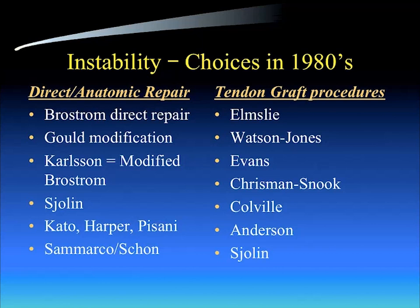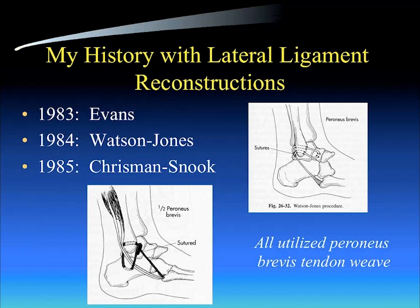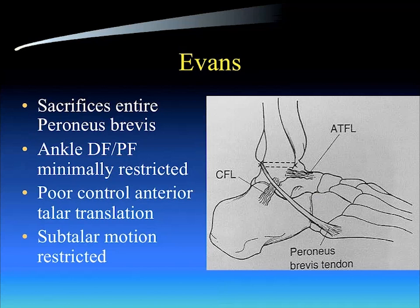Let me briefly go into some of these different types of reconstructions that I was exposed to and actually performed in my training and early in my career. My history of lateral ligament reconstructions first began in 1983 with the Evans procedure. In 1984, we progressed to the Watson-Jones procedure. In 1985, we started exploring the Chrisman-Snook procedure. All three utilized the peroneus brevis as a tendon weave in some way or form.